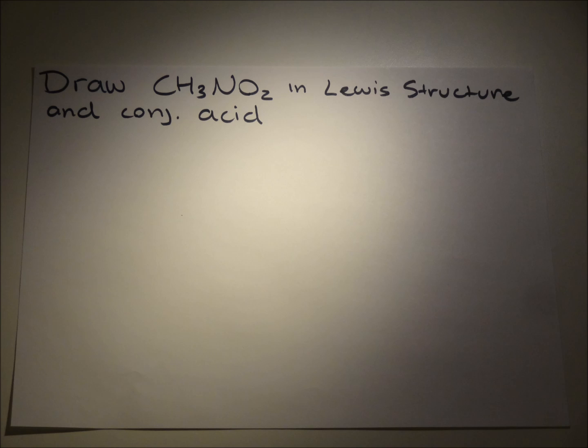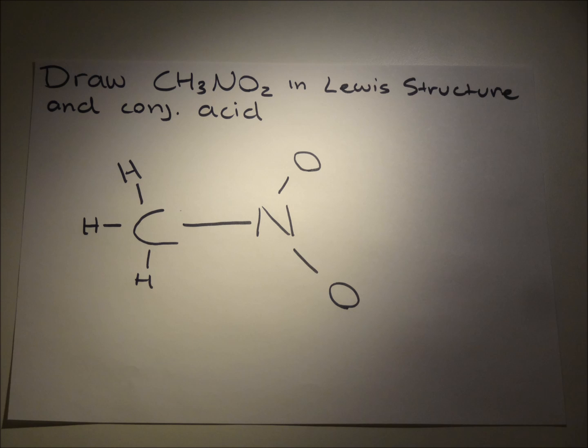Carbon can have up to four bonds in its neutral state, which it will have one with each hydrogen and one with the nitrogen. The nitrogen can have up to three bonds in its neutral state, which it will have one with carbon and one with each oxygen.